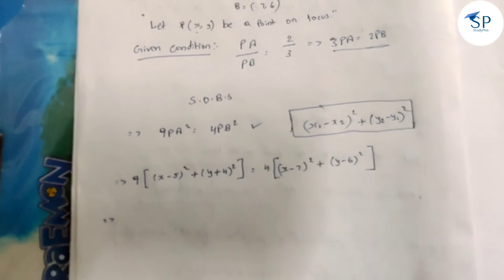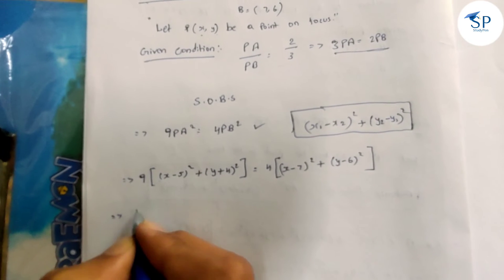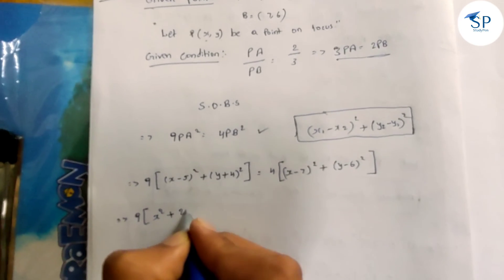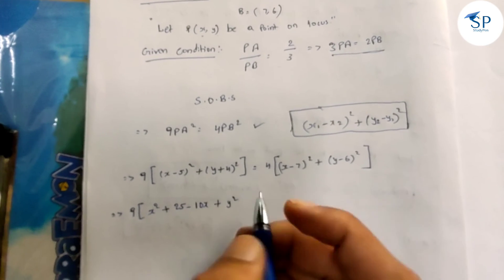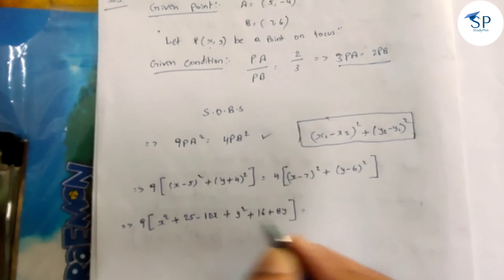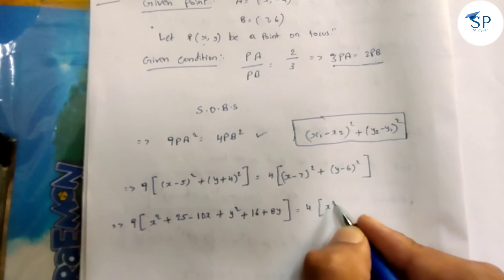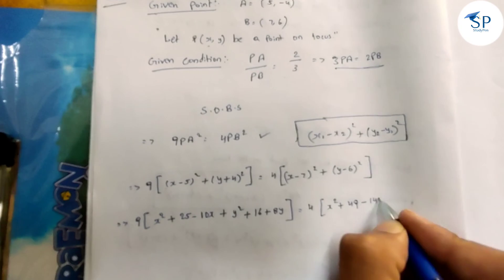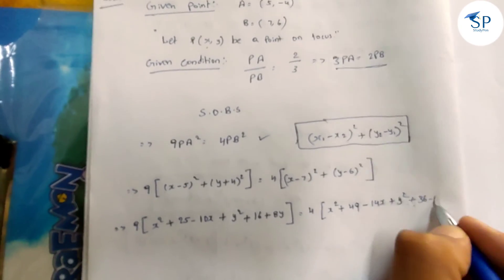Using the formula a² + b² - 2ab, we substitute and expand. So: 9 of (x² + 25 - 10x + y² + 16 + 8y) is equal to 4 of (x² + 49 - 14x + y² + 36 - 12y).